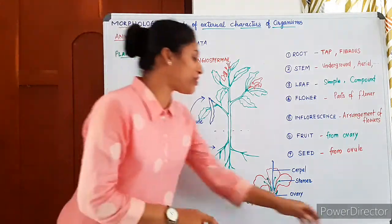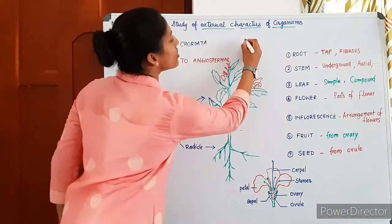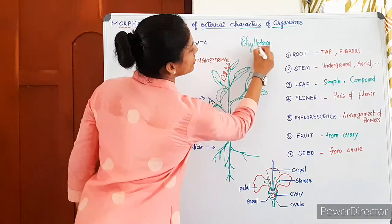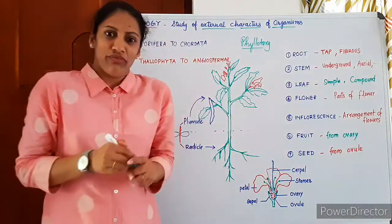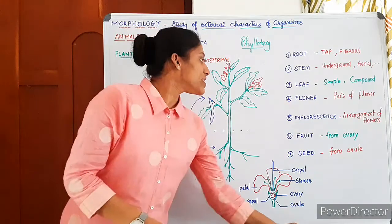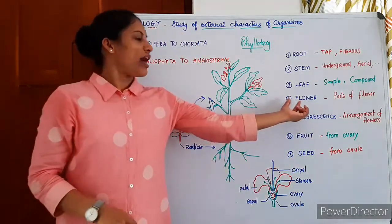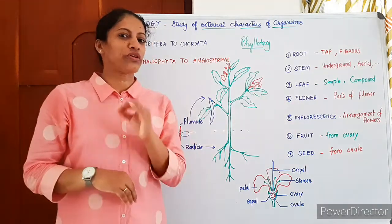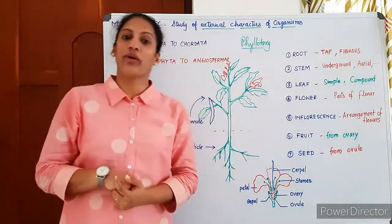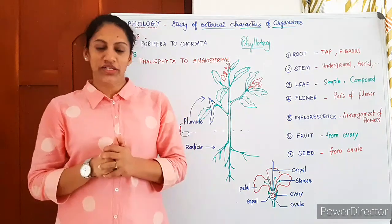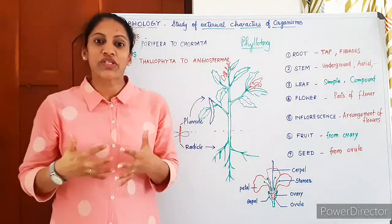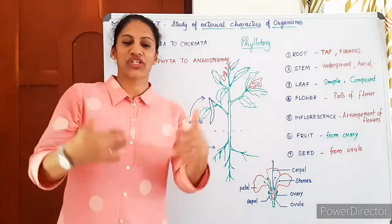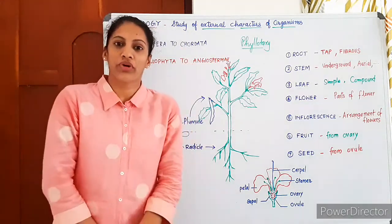Phyllotaxy is the arrangement of leaves on the stem. Another important part of a flowering plant is the flower. The flower is a reproductive part of the plant; it helps in the production of seeds and in maintaining life generation after generation. The flower has many parts — sepals whose whorl is called calyx, petals whose whorl is called corolla.